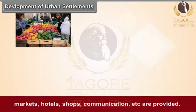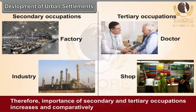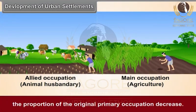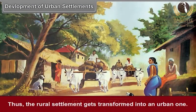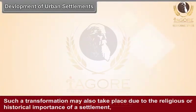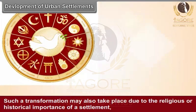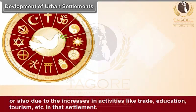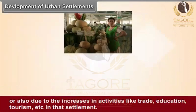markets, hotels, shops, communication, etc. are provided. Therefore, the importance of secondary and tertiary occupations increases and, comparatively, the proportion of the original primary occupations decreases. Thus, the rural settlement gets transformed into an urban one. Such a transformation may also take place due to the religious or historical importance of a settlement, or also due to the increase in activities like trade, education, tourism, etc. in that settlement.